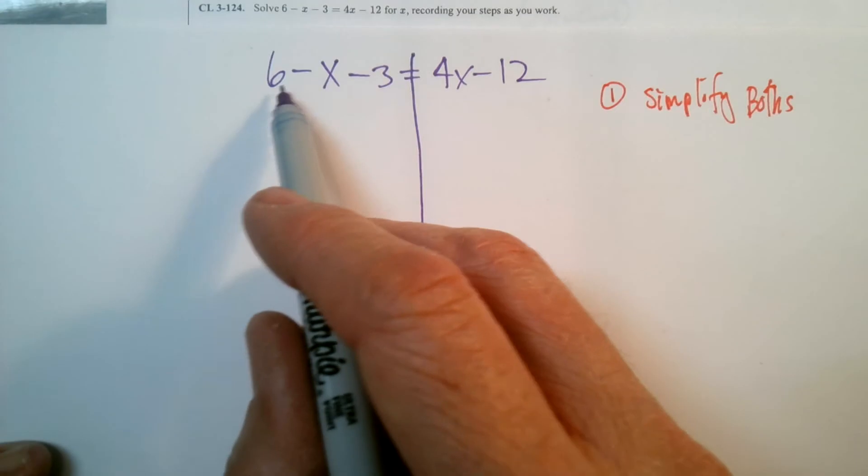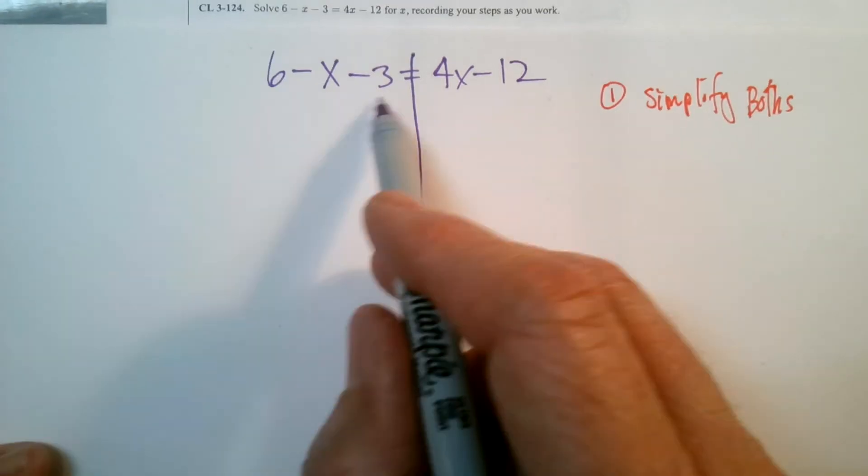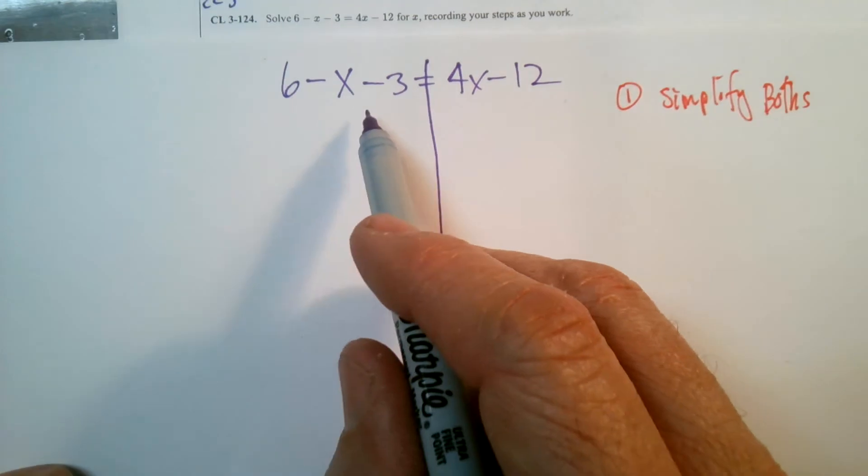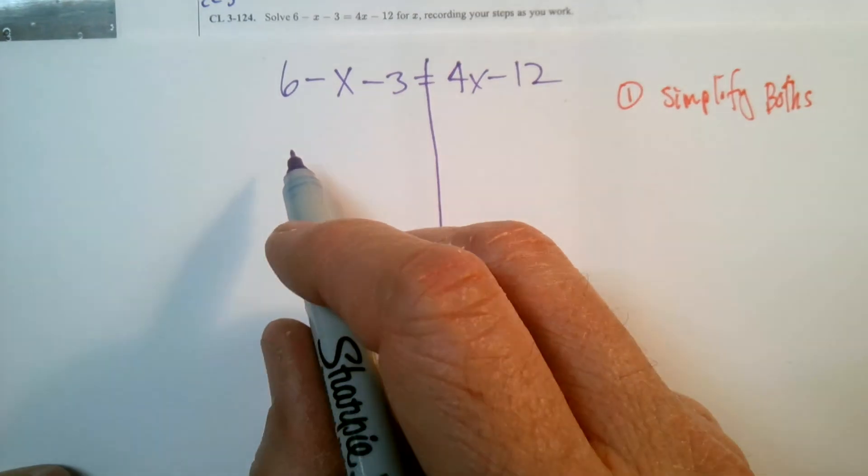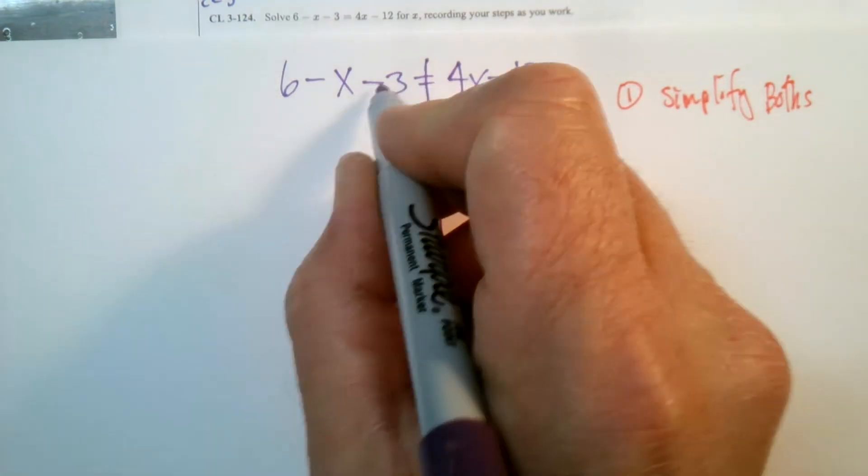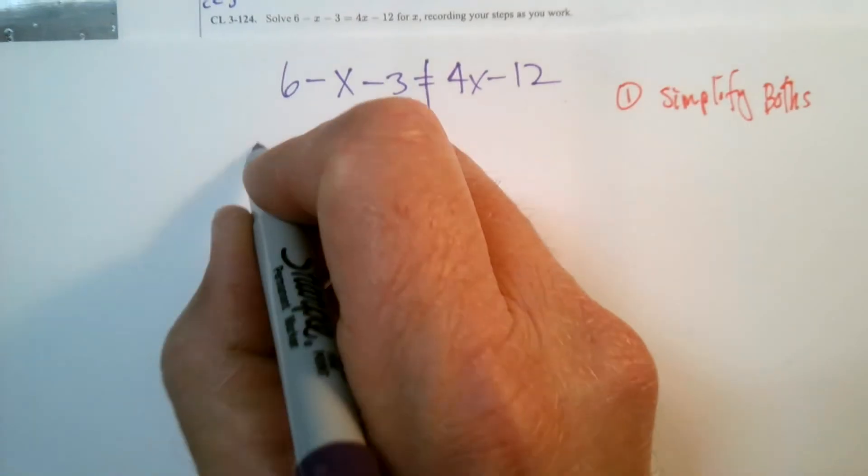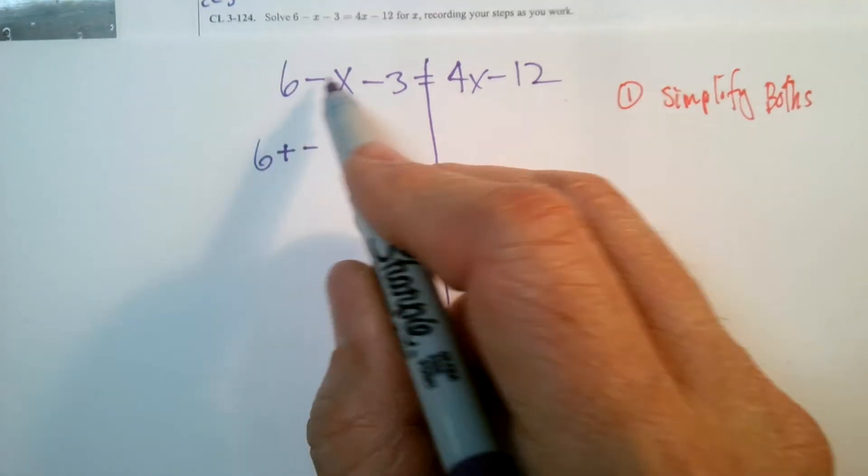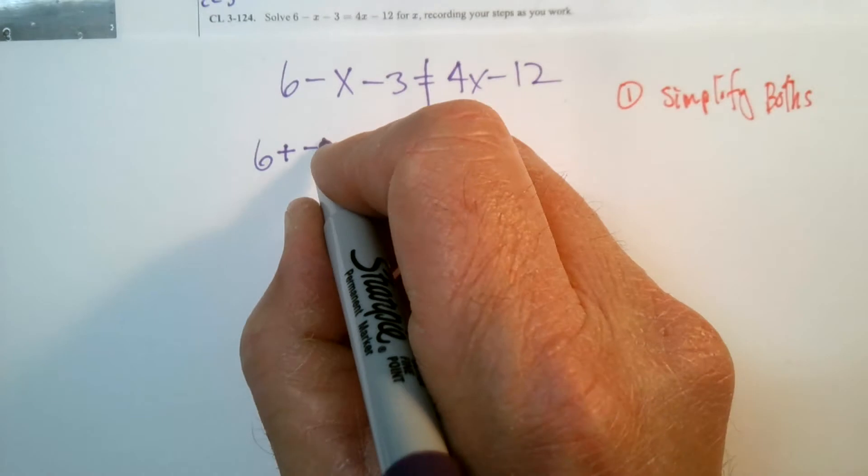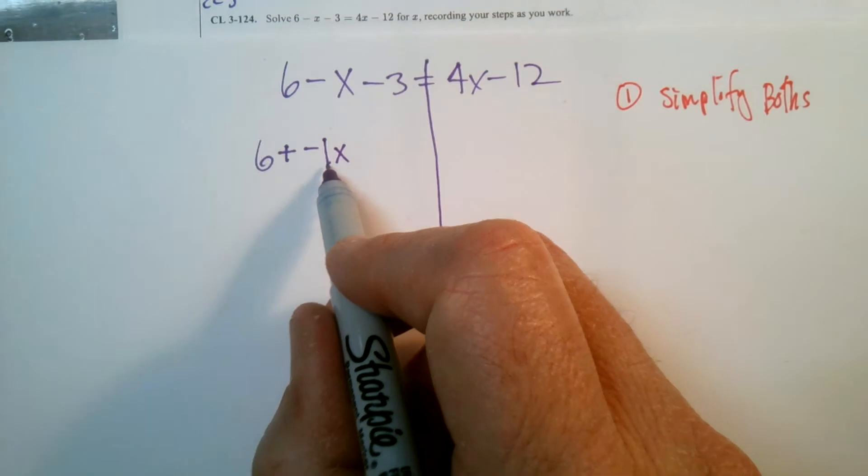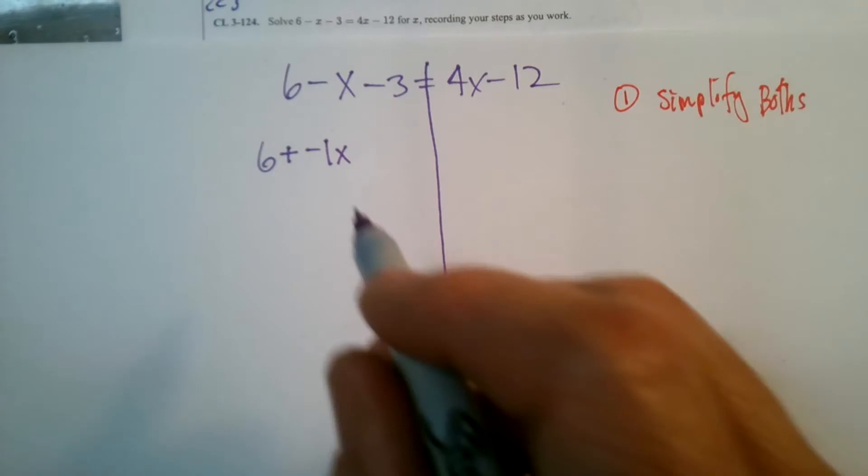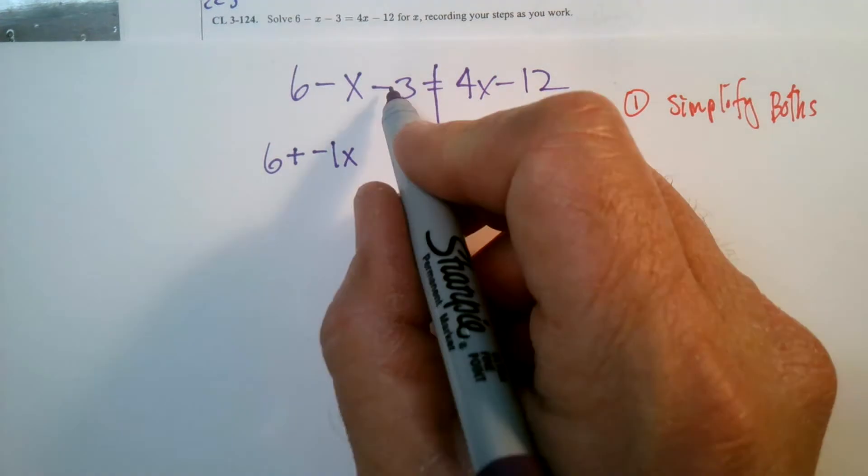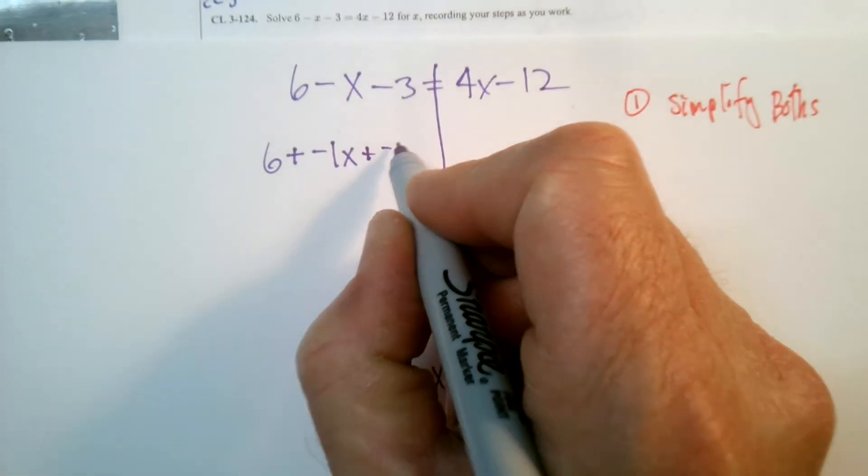So over here, I look at 6 minus X minus 3. I can do some simplifying because there's some terms I can combine. Because I use that word combine like terms, I tend to not use minuses. I'm not a big fan of minuses when I'm doing combining, that subtraction symbol. Remember, subtraction is the same thing as adding the opposite. So this is 6 minus X, but now I'm going to write it as 6 plus negative. And it's a negative 1X. I tend to also put the 1 in front of X at times just so that way I realize that's 1X. And then minus 3, so instead of minus 3, it's plus negative 3.